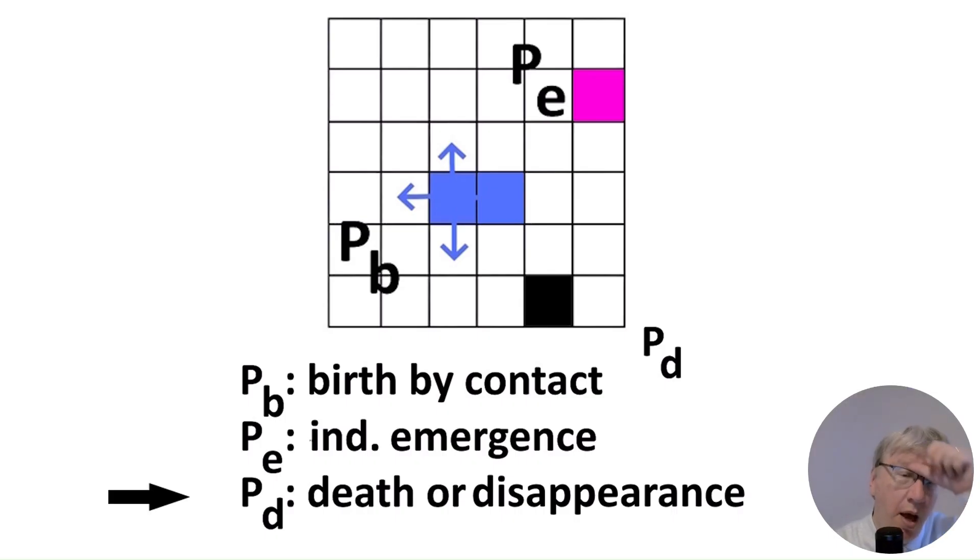Finally, a motif might disappear from a tradition with some probability PD, D like death or disappearance, and the disappearance of the black square from the grid illustrates this.